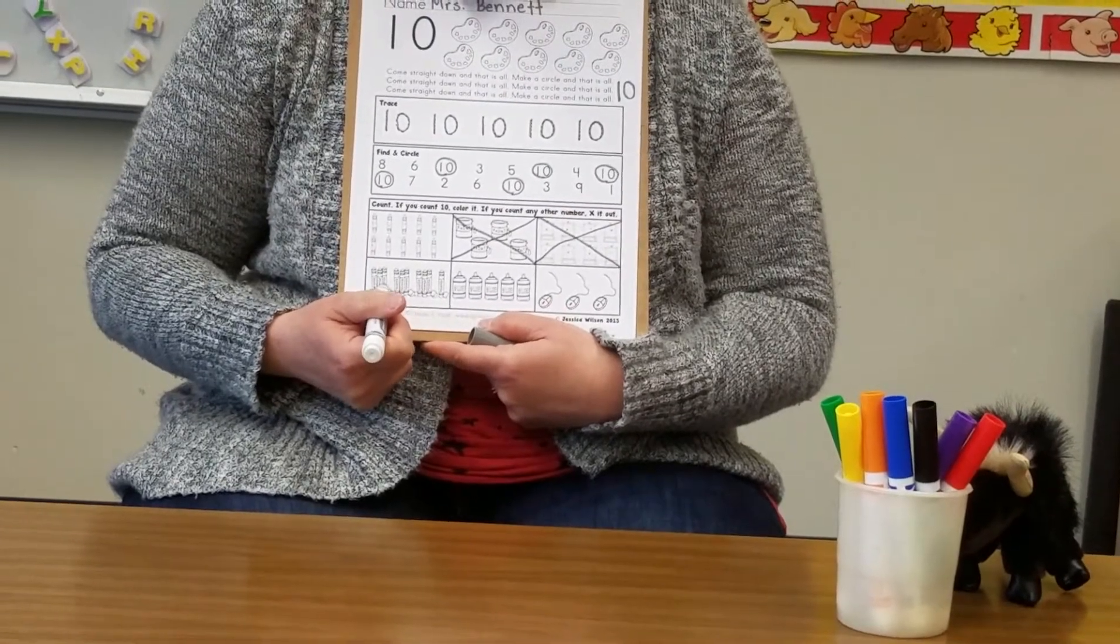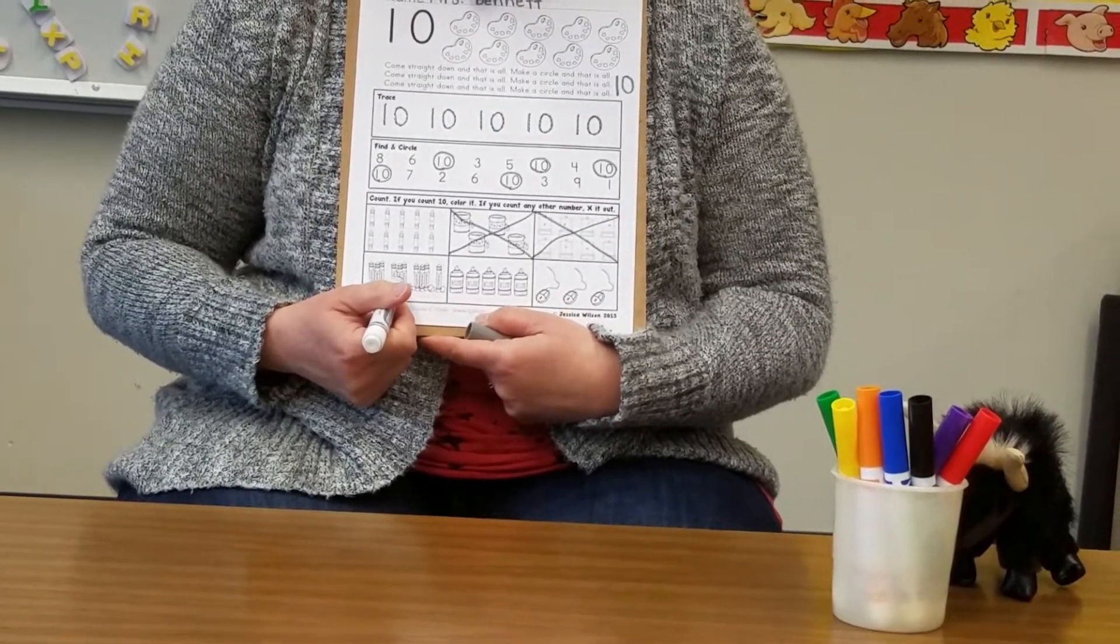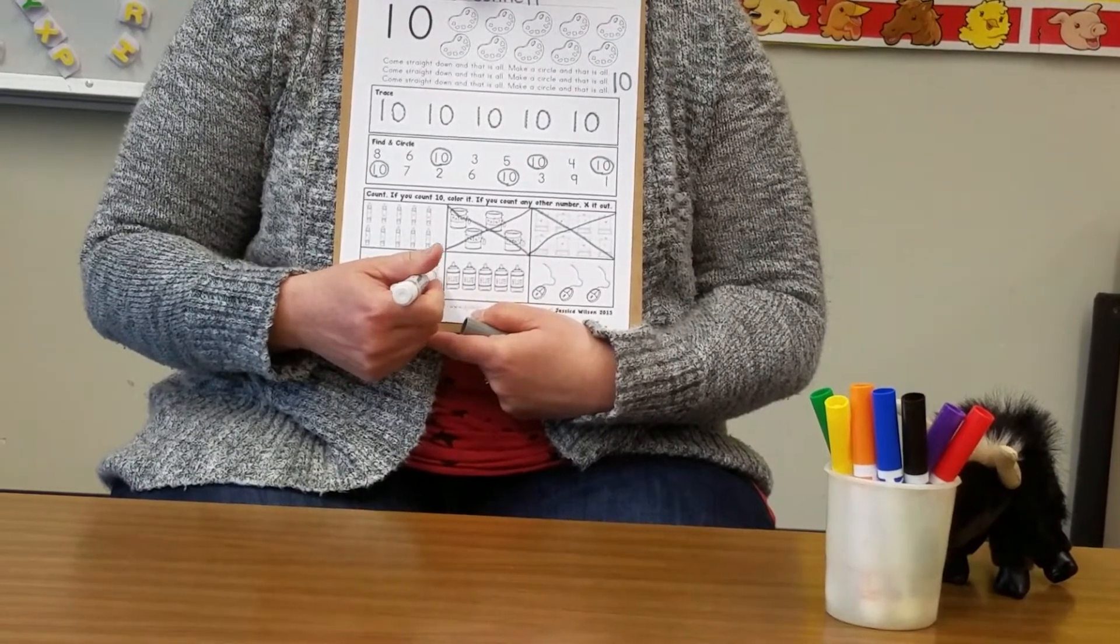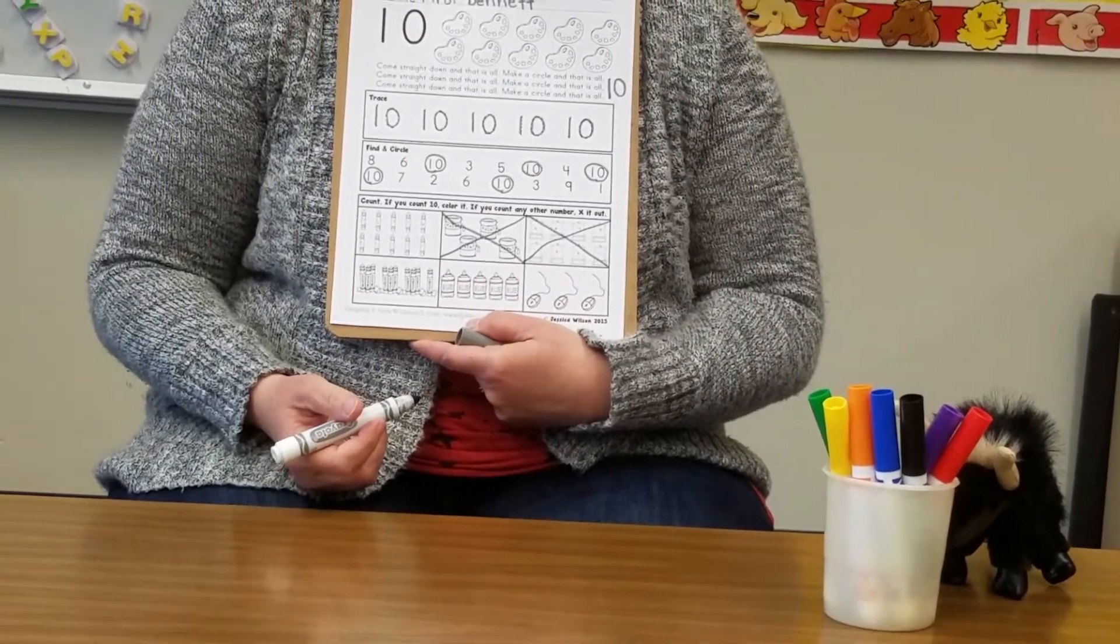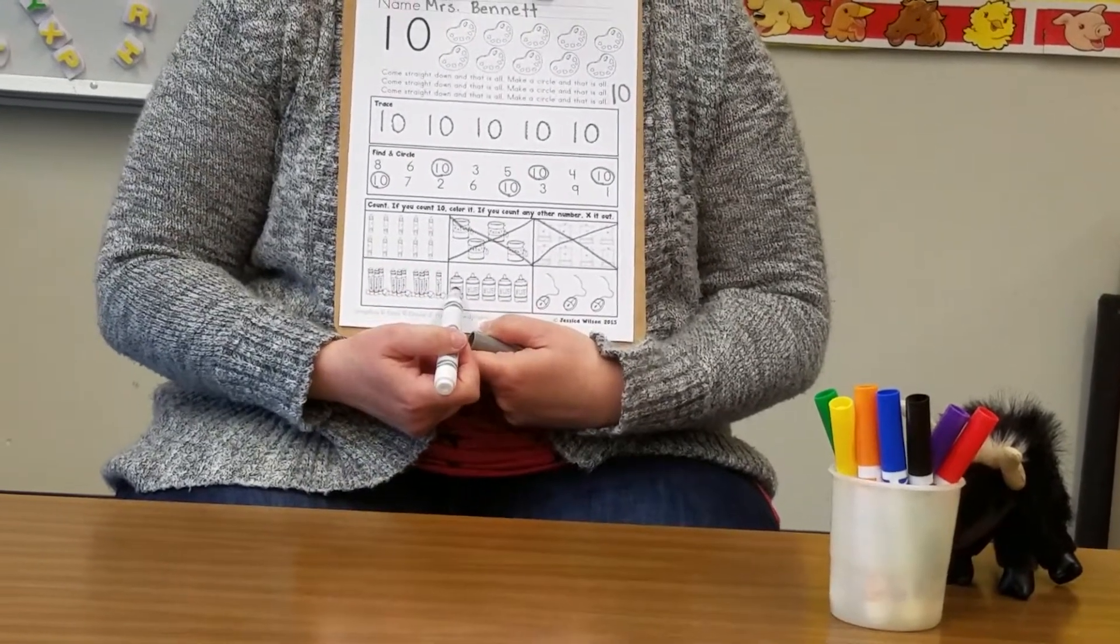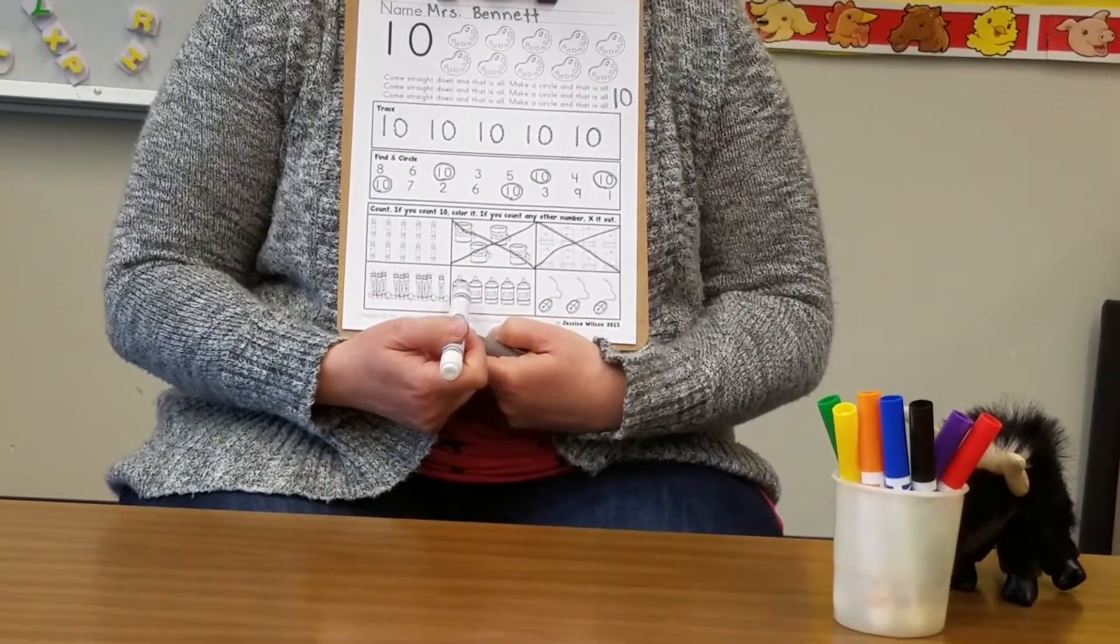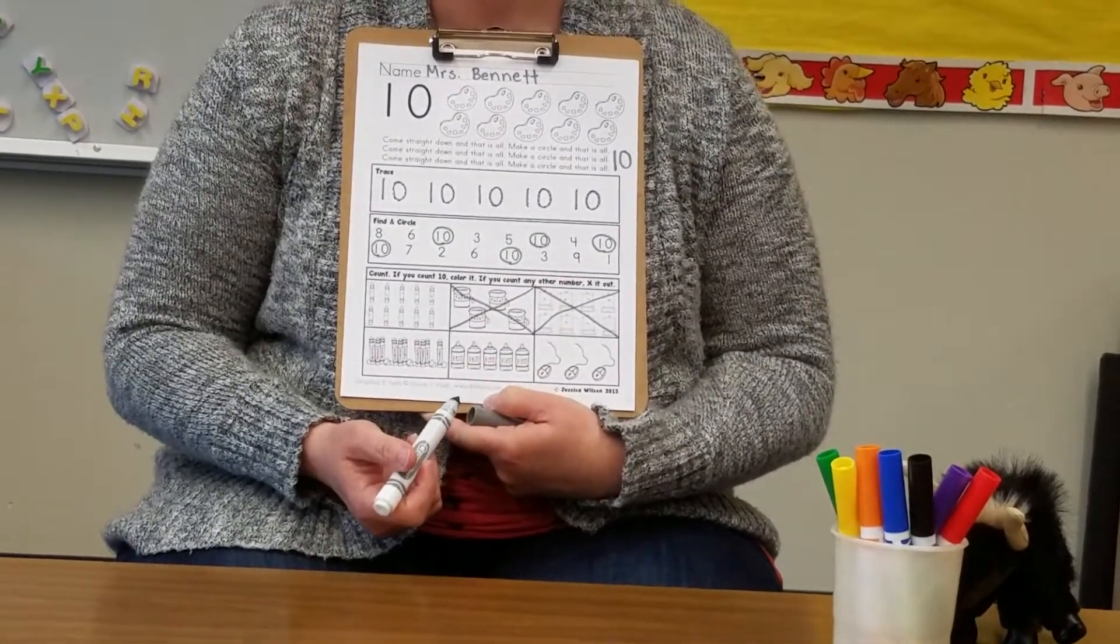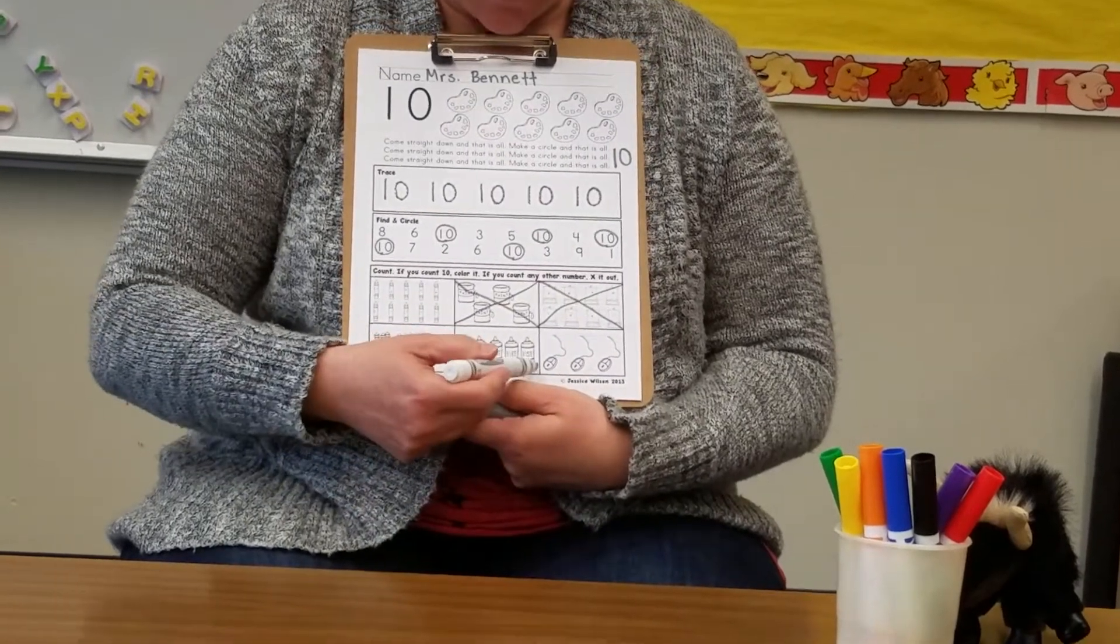1, 2, 3, 4, 5, 6, 7, 8, 9, 10. So we're going to come back later and color them. Let's count the bottles of glue. 1, 2, 3, 4, 5. So we will exit out.